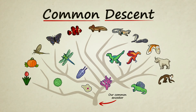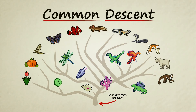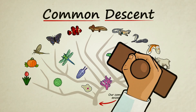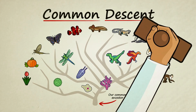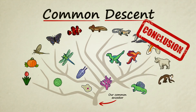The common descent of all life on Earth is not a directly observable fact. We have no way of going back in time to watch it happen. Instead, common descent is a conclusion based on a massive collection of facts.